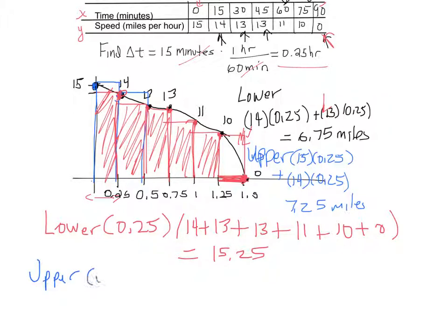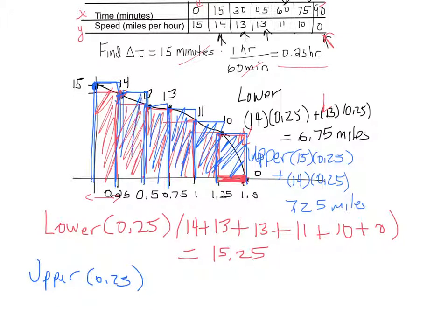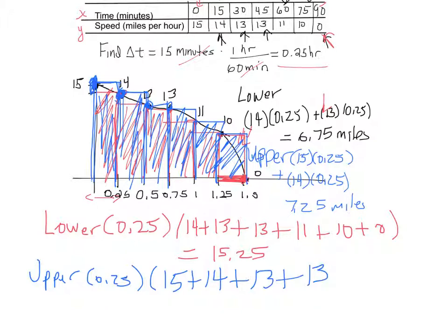For the upper estimate over the full 90 minutes, it's 0.25 times the upper rectangle heights. Now I'm looking at the tops of the rectangles that are above the function. Going through each one, the heights are 15 plus 14 plus 13 plus 13.